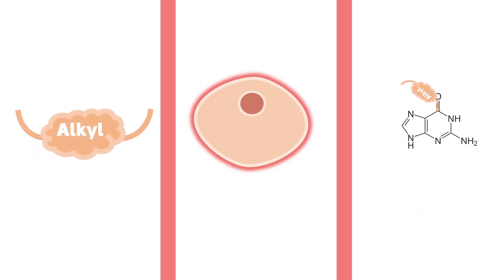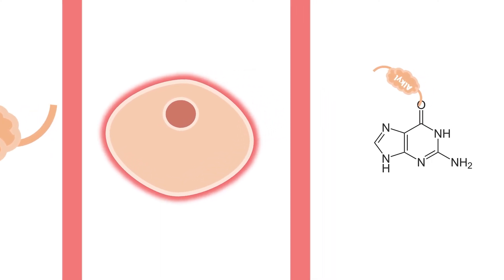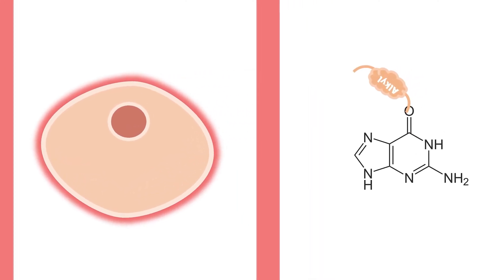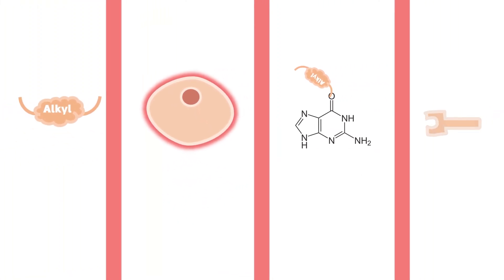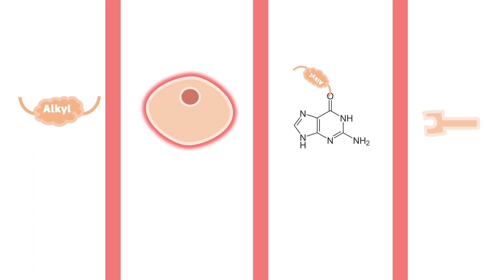If we change the alkylating agent, it may have a different binding site with the guanine. For example, it can bind with the oxygen number 6, forming a different structure of adduct. Each type of adduct has its distinct detection and repair mechanisms by the cell.